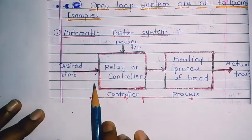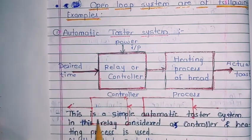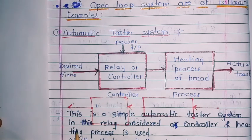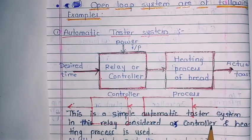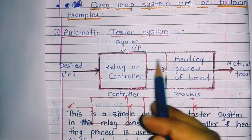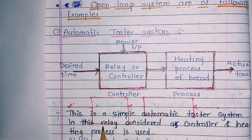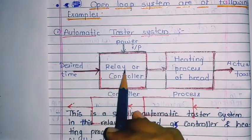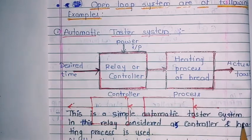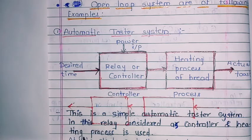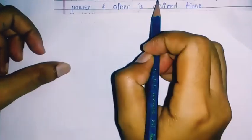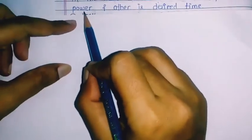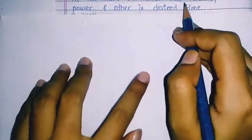First point: this is a simple automatic toaster system in which the relay is considered as a controller and the heating process is used. The controller has two inputs: one is power and the other is desired time, as already shown in the diagram.